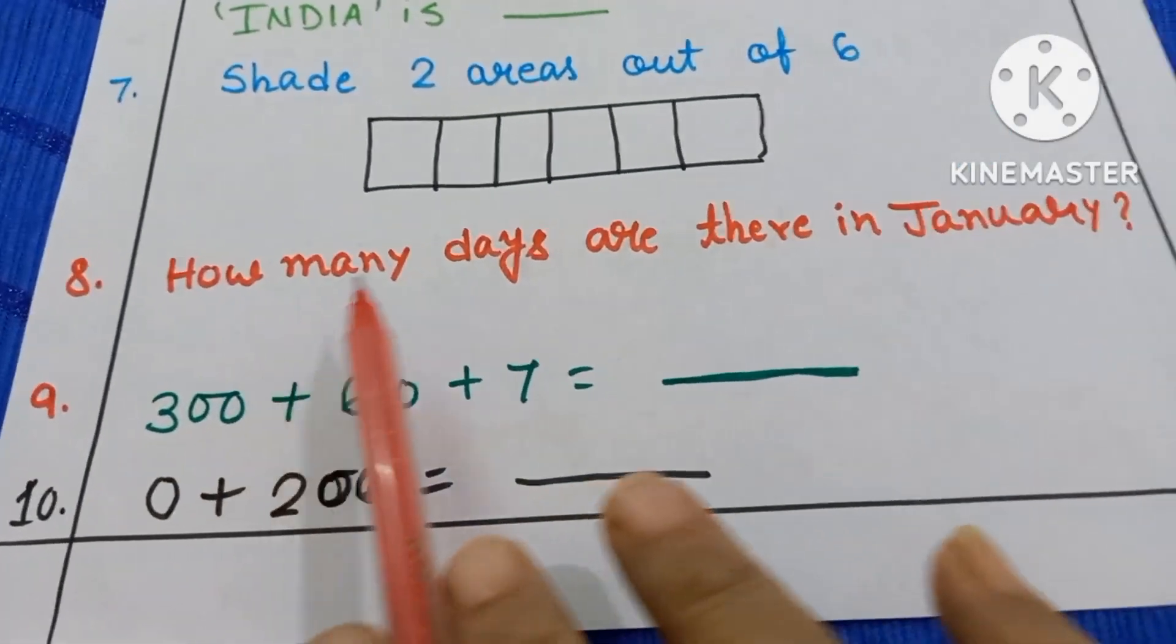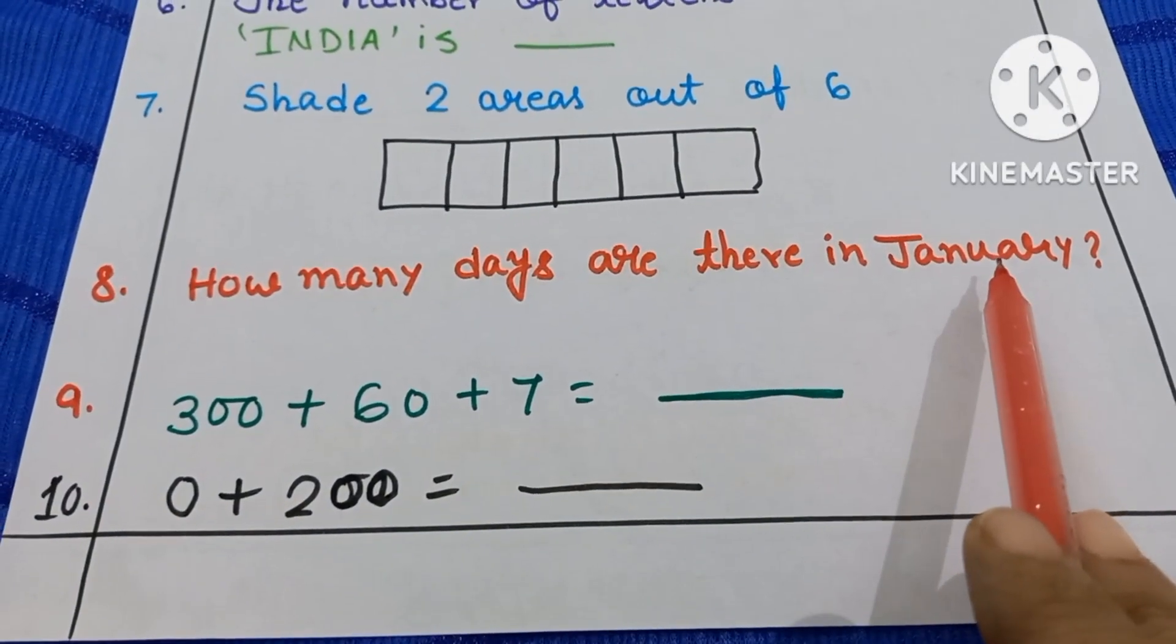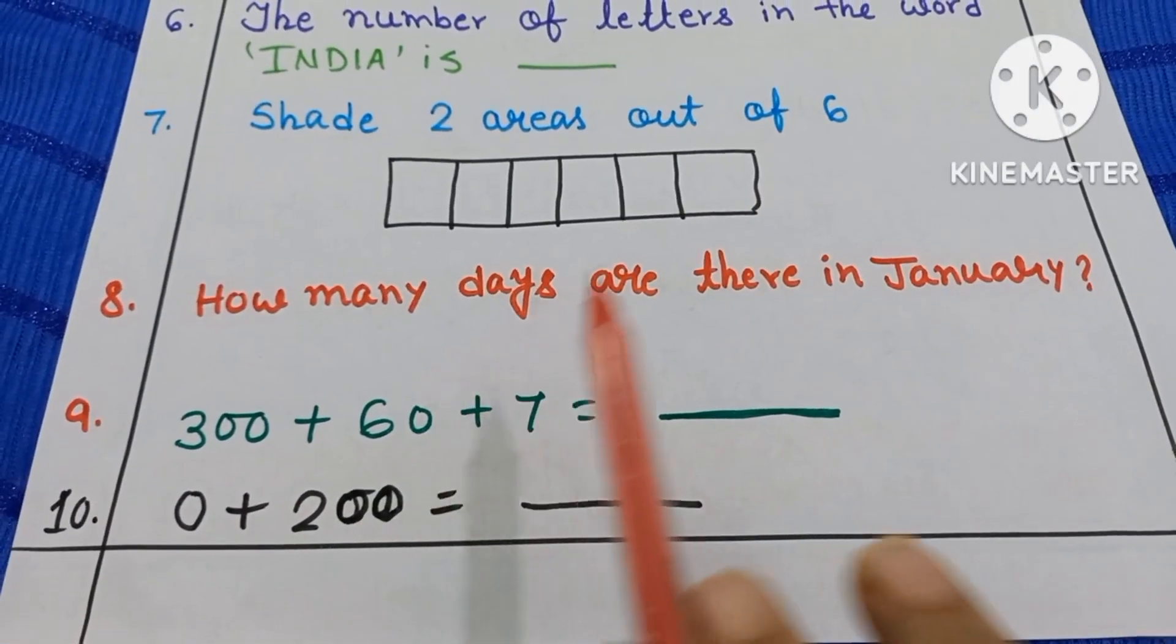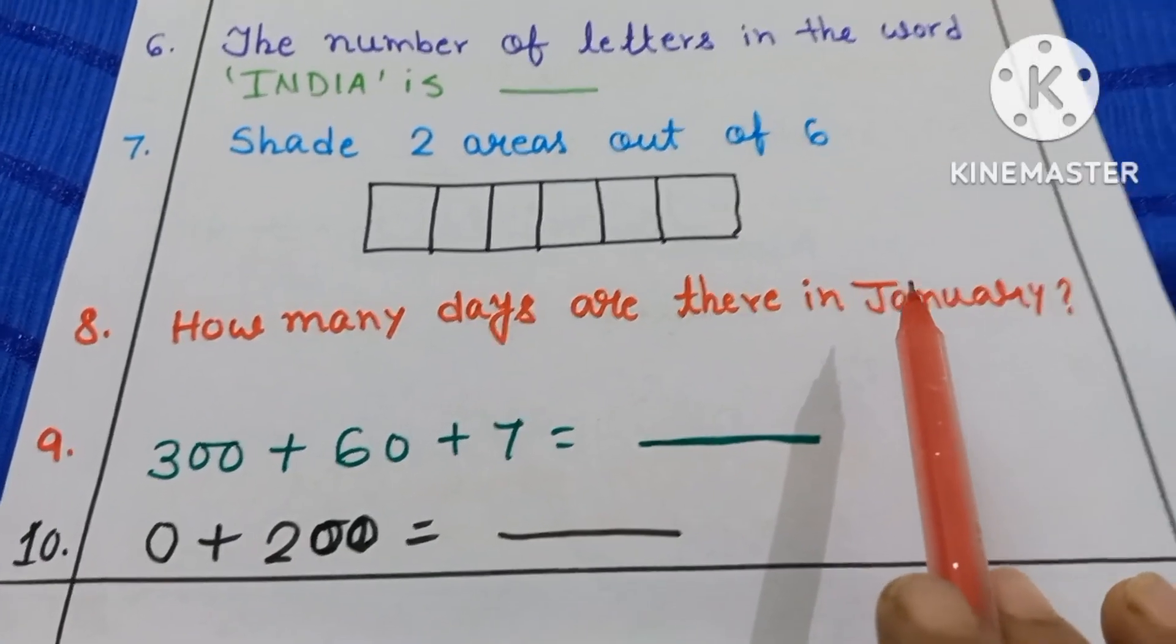Number 8. How many days are there in January? So January month has how many days? 31.